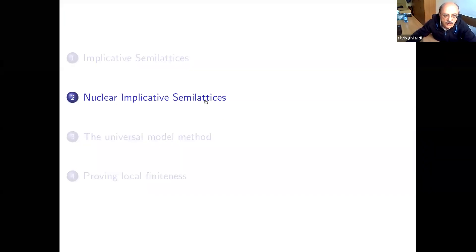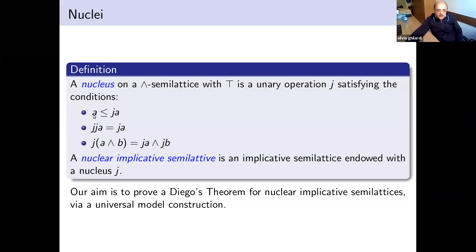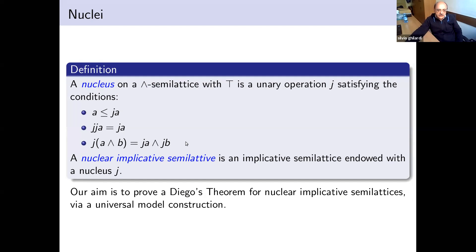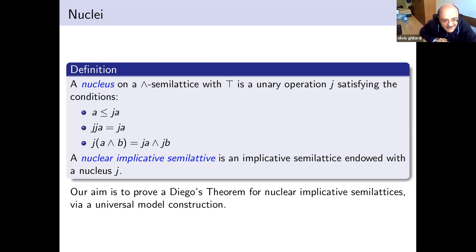Now let's start considering nuclear implicative semilattices. A nucleus can be defined for semilattices — there is no need for implication. It is a unary operation j satisfying: every element is less than j of itself; j is idempotent; and j commutes with conjunction. A nuclear implicative semilattice is an implicative semilattice equipped with this operator. It has some properties resembling a box modality but actually resembles more a possibility operator.